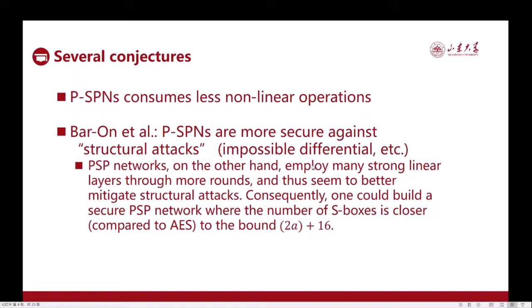Our community has conjectured several advantages of the partial SP networks. Obviously one would think that to achieve the same level of security, PSPNs consume less nonlinear actions than normal SPNs. Of course this is the very motivation of using this structure. Bar-On conjectured that by trading stronger linear layers with some S-boxes, PSPNs can achieve more security against structural attacks such as impossible differential and integral. We will study the models of partial SP networks and try to shed some light on these questions.